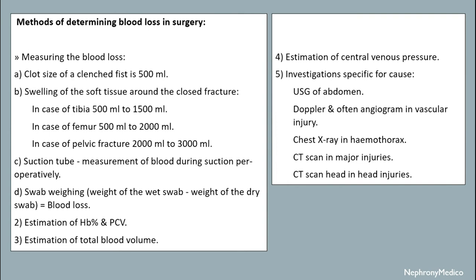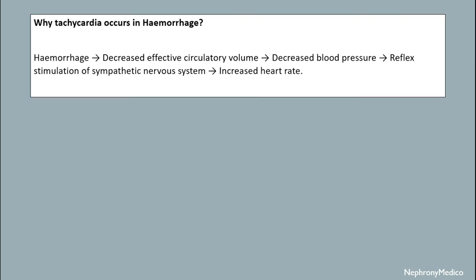Why does tachycardia occur in hemorrhage? In hemorrhage there is decreased effective circulating volume, leading to decreased blood pressure, and there is reflex stimulation of the sympathetic nervous system leading to increased heart rate — so tachycardia occurs.